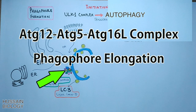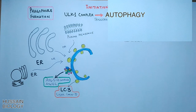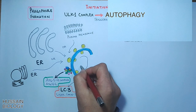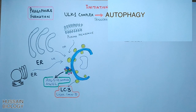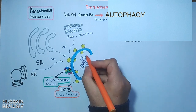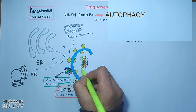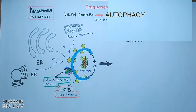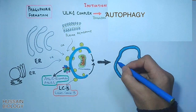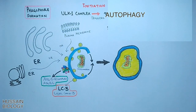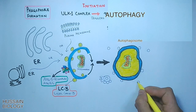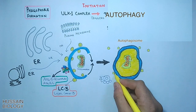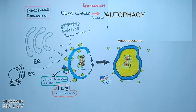The phagophore engulfs the mitochondria, and then the ATG12–ATG5–ATG16L complex completes the elongation of the phagophore into the vesicle, giving us the fully formed autophagosome as shown in the diagram. It must be noted that when mitochondria are taken in for degradation, this process is termed mitophagy.